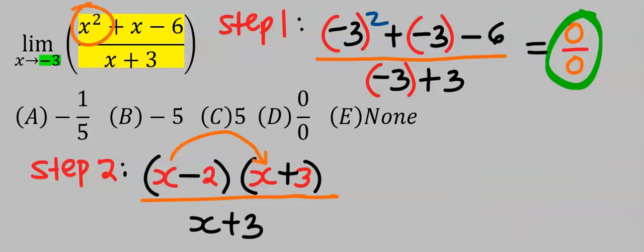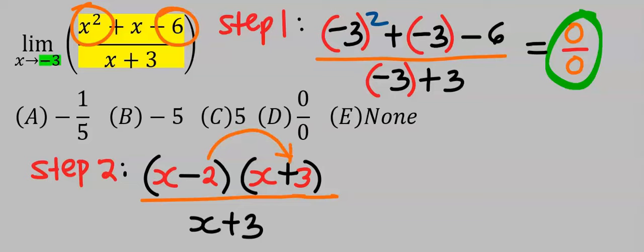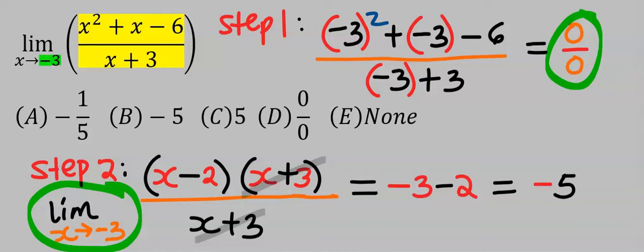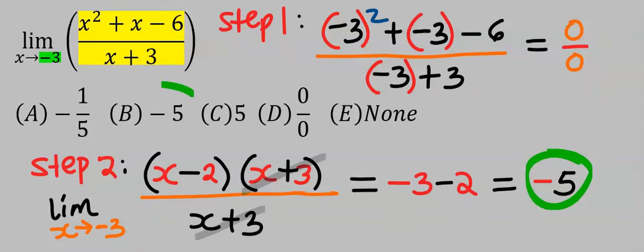We can see that x times x gives x², and minus 2 multiplied by 3 gives minus 6, while minus 2 plus 3 gives plus 1. Taking the limit of the remaining function as x tends to minus 3, we get minus 3 minus 2 equals minus 5. The answer is option B. Applying differentiation to this function also gives the same answer.